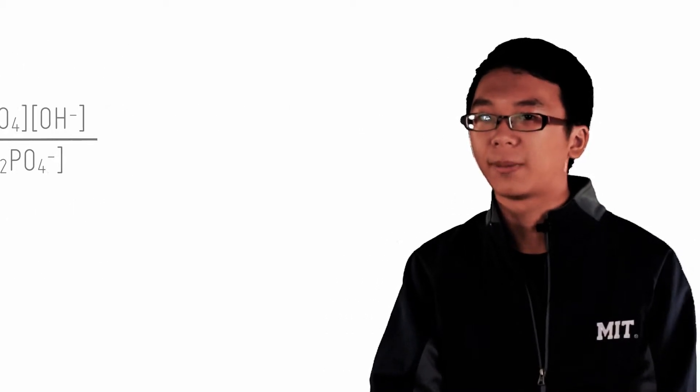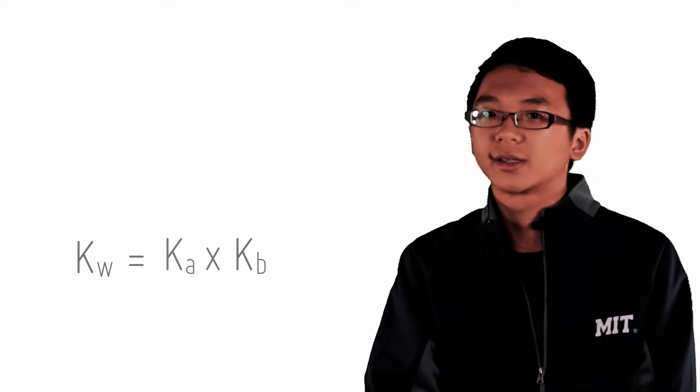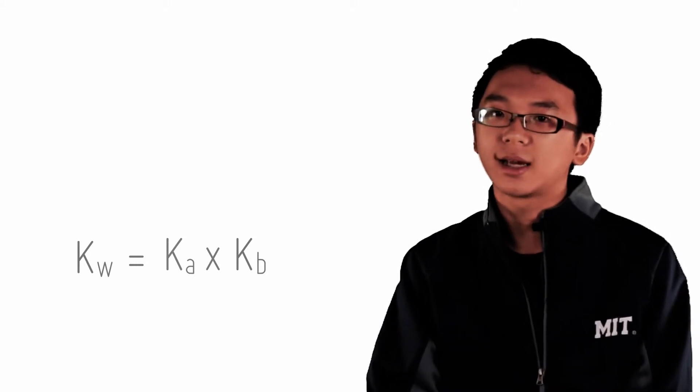Amazing, isn't it? Ka multiplied by Kb gives you Kw. If you can't derive this, remember this. Of course, this also means that if you took P of both sides, you get pKa plus pKb equals to pKw.